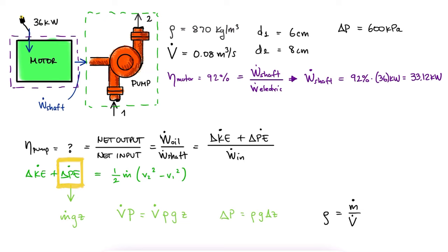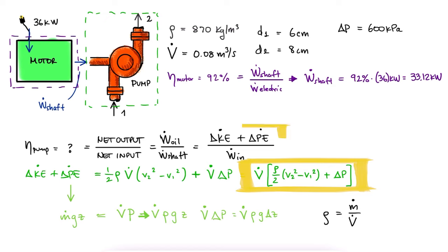This means that the change in potential energy can be written as the volumetric flow rate times the change in pressure. By factoring out the volumetric flow rate, we find an expression to find the total mechanical work.